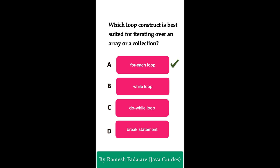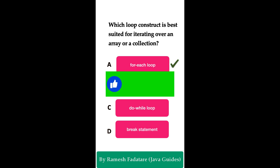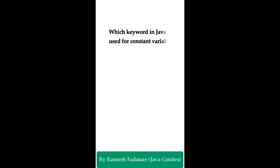The for-each loop, also called the enhanced for loop, is best suited for iterating over an array or a collection in Java. It simplifies the syntax for iterating through each element without needing to use an index or iterator explicitly.